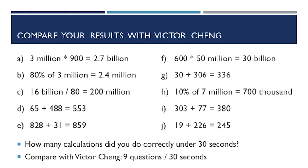How many calculations did you do correctly under 30 seconds? Let's compare with Victor Chang — he did nine questions under 30 seconds with 100% accuracy. What you should prioritize is accuracy: even if you only get one, two, or three calculations correct within 30 seconds, get them right. Once you get a number wrong, your entire case analysis is compromised and the interviewer will not forgive that mistake.